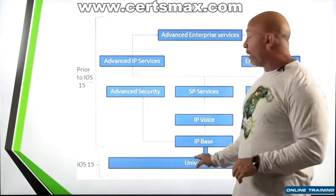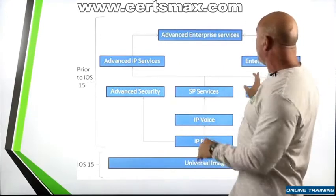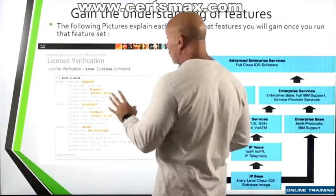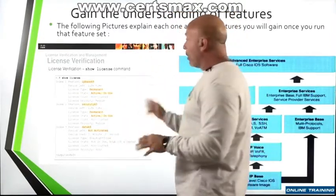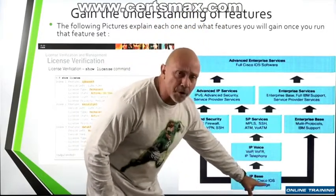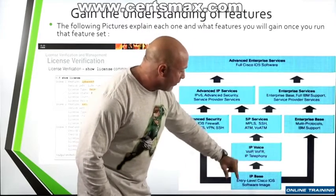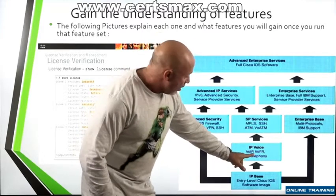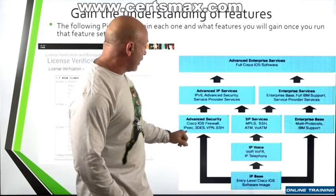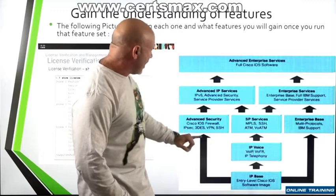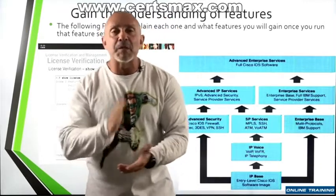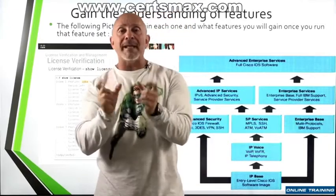This is prior to IOS 15. With IOS 15, pretty much all of this is encompassed. You can go to Cisco's website to find this breakdown. IP base is entry-level Cisco IOS. IP voice has voice and IP telephony. Advanced security covers Cisco IOS firewalls, VPNs, 3DES, and SSH. Each IOS is specific to its feature set.